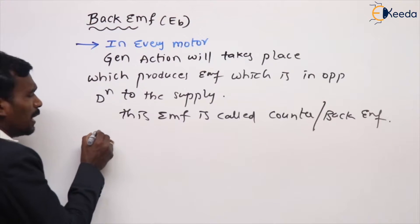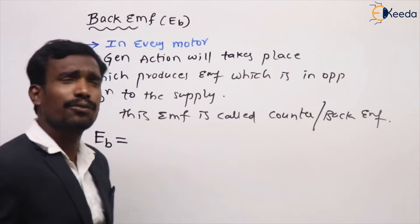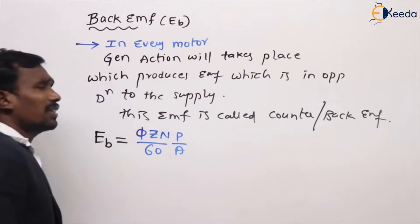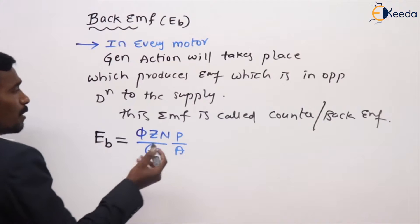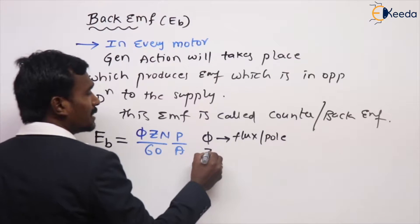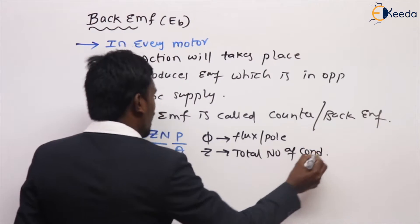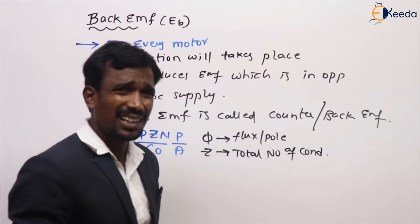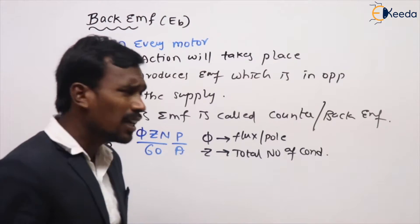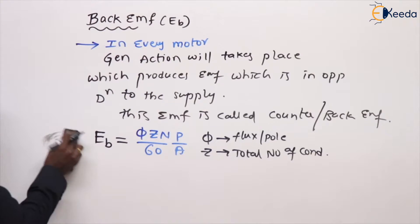What is the formula for this back EMF? The formula for back EMF is same as the generated EMF. It is Phi·Z·n upon 60, and P upon A — the values are same. Here, Phi is the flux per pole, Z is the total number of conductors. P is the number of poles, and A is the number of parallel paths. There is no difference between generated EMF and back EMF in mathematical expression — for both, the answer is the same.